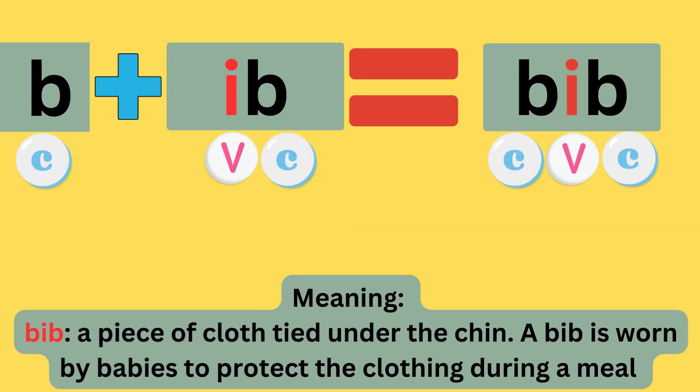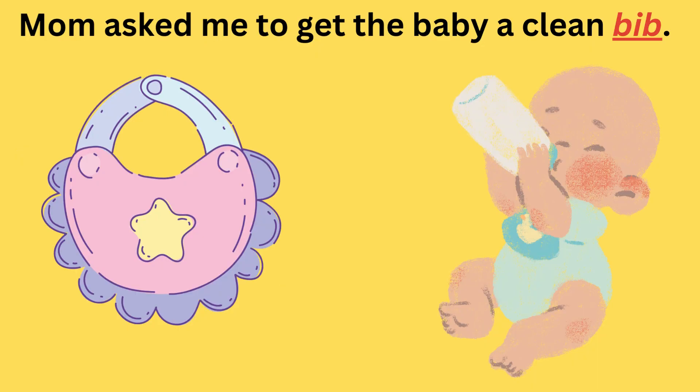B plus -ib equals bib. The sounds are: buh, ee, buh — bib. The meaning is a piece of cloth tied under the chin. Mom asked me to give the baby a clean bib.